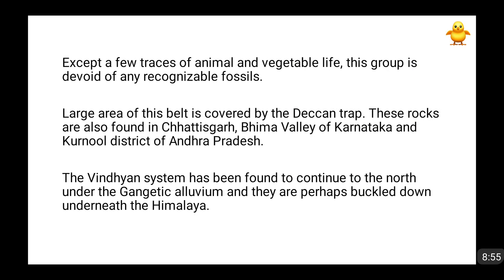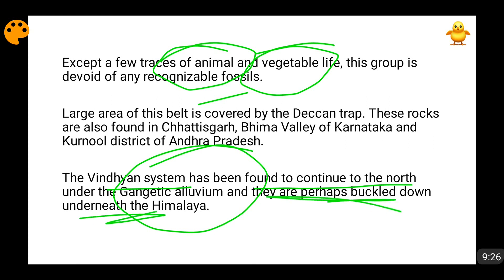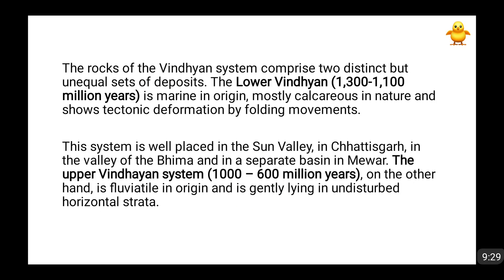A few traces of animal and vegetable life are found in these Vindhyan ranges. Whereas the Archean, Dharwar, and Kudappa ranges had no fossils, the Vindhyan ranges do have a very small amount of fossils. This Vindhyan system also continues to the north under the Gangetic Alluvium — it is said that Vindhyan rocks are formed beneath the alluvial soil of the northern plains, and many of these rocks also buckled down beneath the Himalayas, because the Himalayas are consistently moving upward.